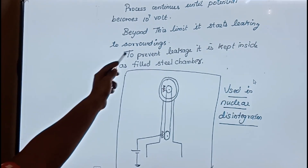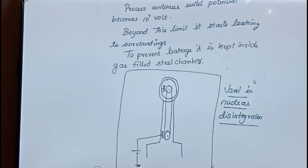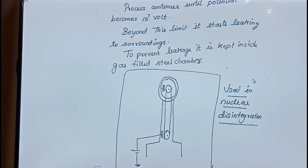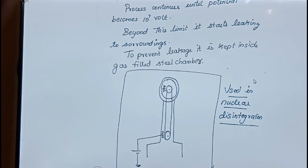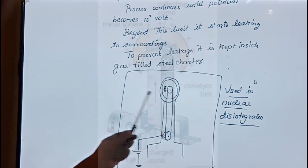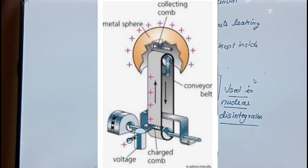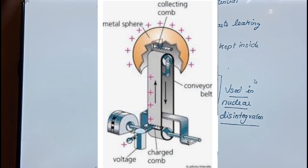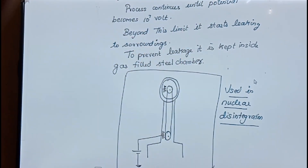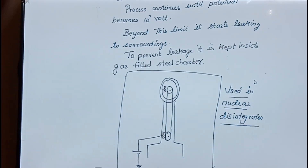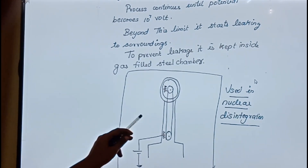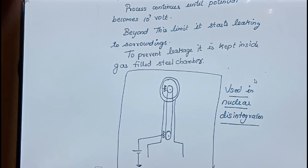At this point, the charge starts leaking to the surroundings. To control the leakage, the Van de Graaff generator is enclosed inside a gas-filled steel chamber.